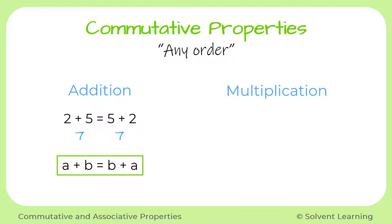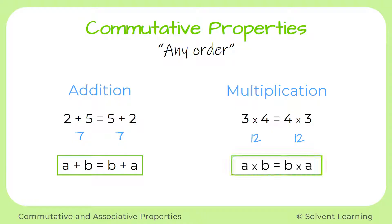Now let's look at what happens with multiplication. If we want to find the product of 3 and 4, we can write it as 3 times 4 or 4 times 3 — we can switch that order around. 3 times 4 will give us 12, and 4 times 3 will still give us 12, so we can multiply in any order. And we can represent this rule with the variables a and b: a times b is equal to b times a.